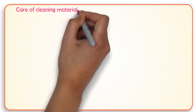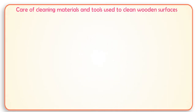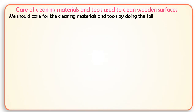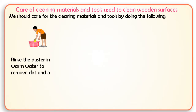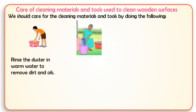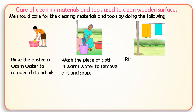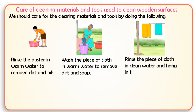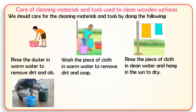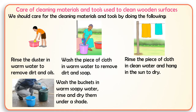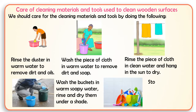Care of cleaning materials and tools used to clean wooden surfaces. We should care for them by doing the following: rinse the duster in warm water to remove dirt and oils. Wash the piece of cloth in warm water to remove dirt and soap. Rinse the piece of cloth in clean water and hang in the sun to dry. Wash the buckets in warm soapy water, rinse and dry them under a shed. Store the cleaning materials and tools in a clean dry place.